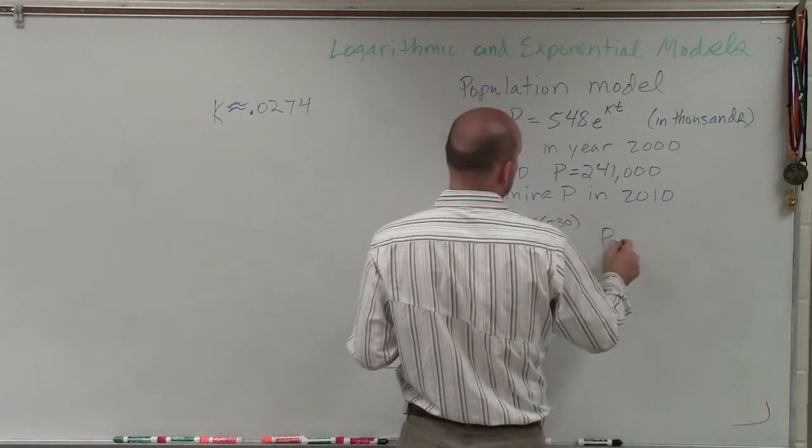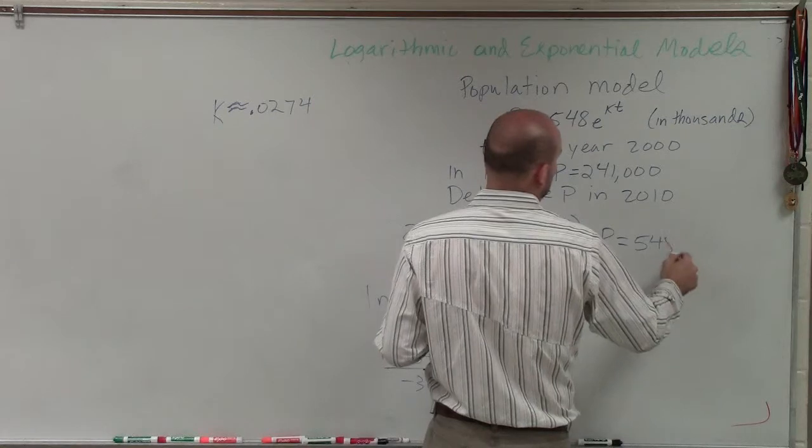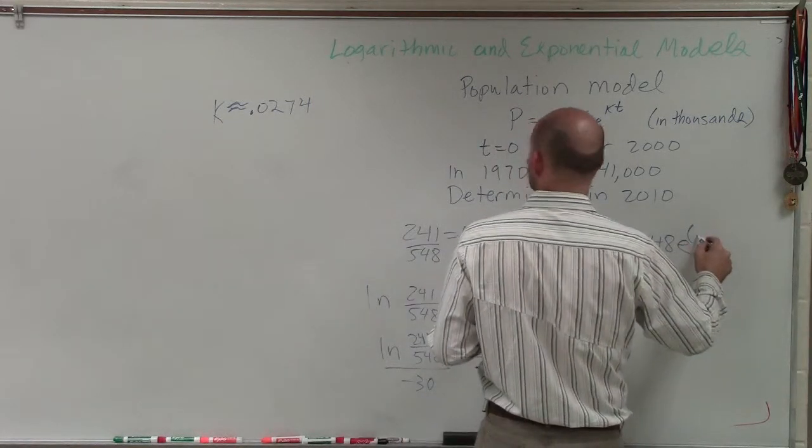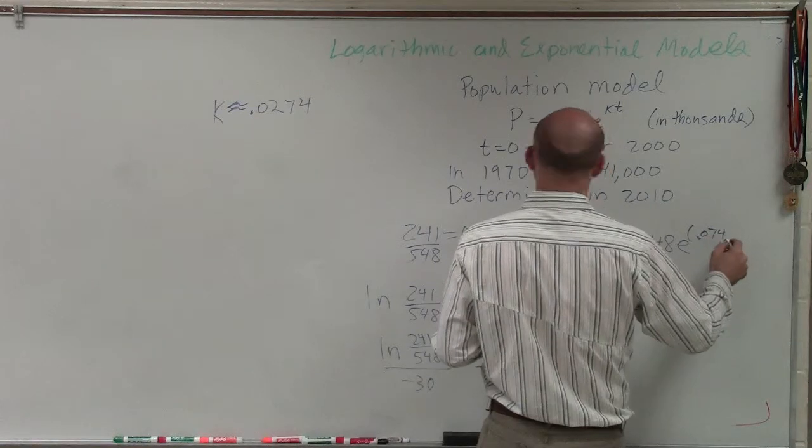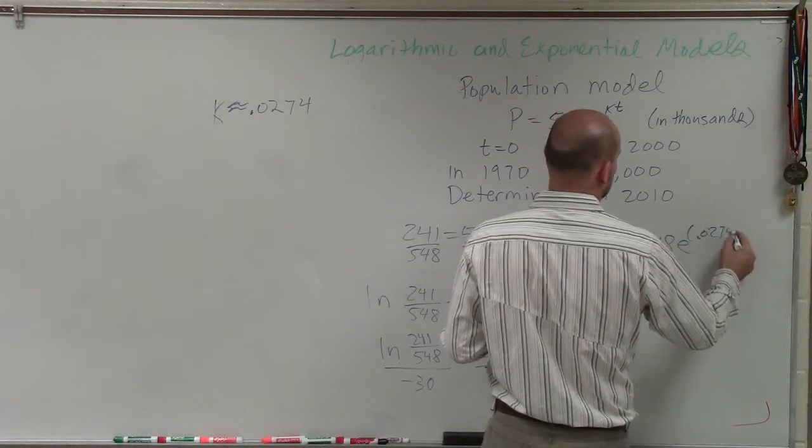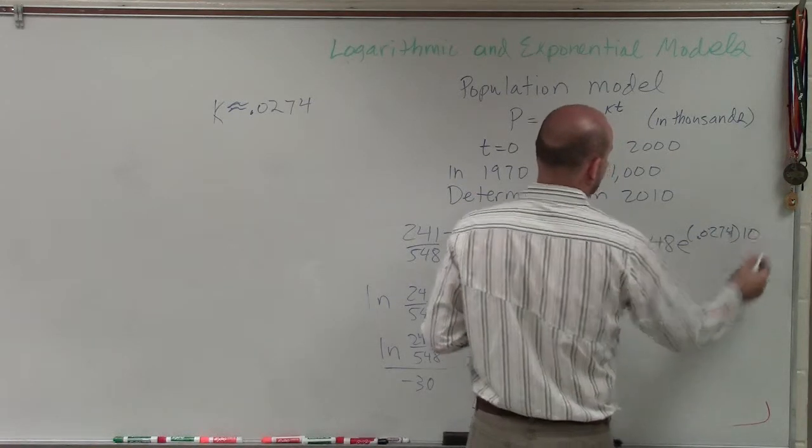So I take back my model. And I say P equals 548 times e to the k, which is approximately 0.0274, times 10.